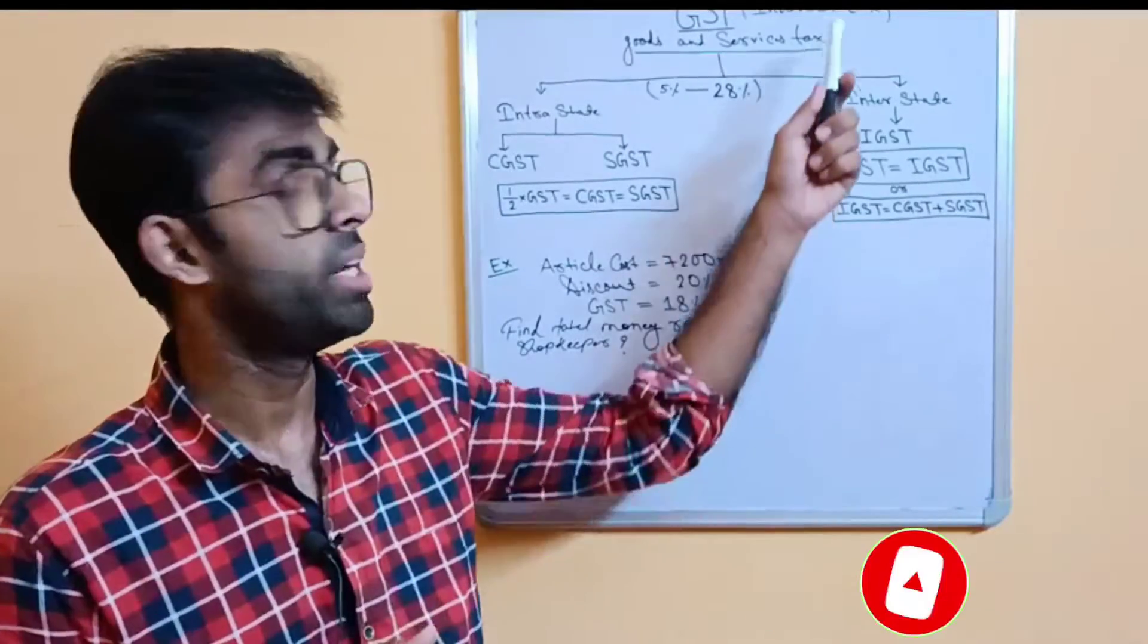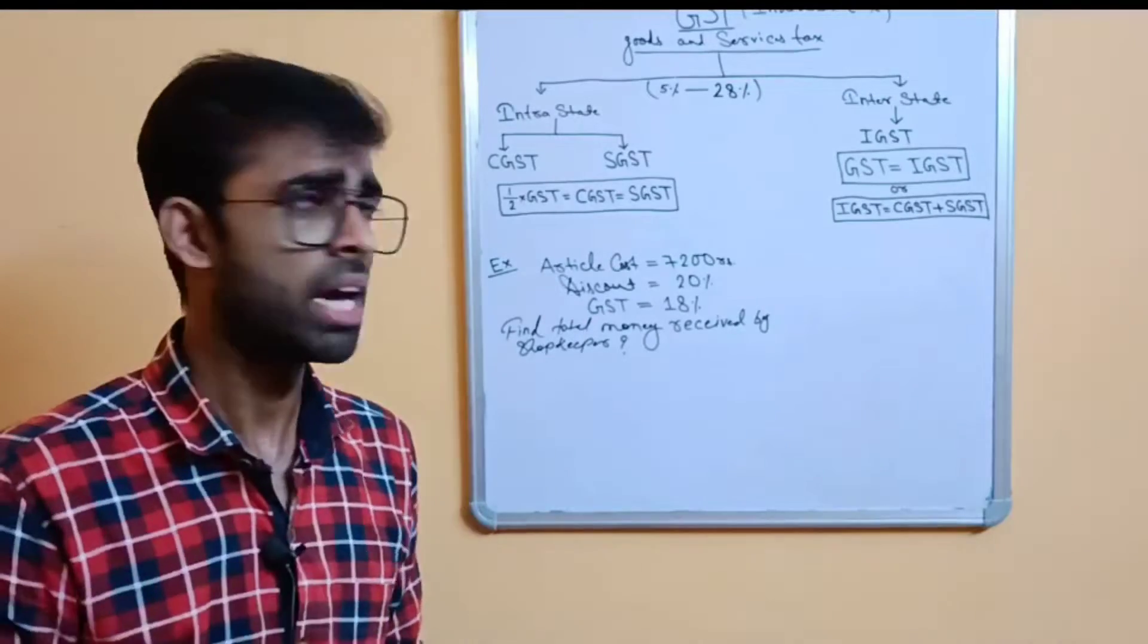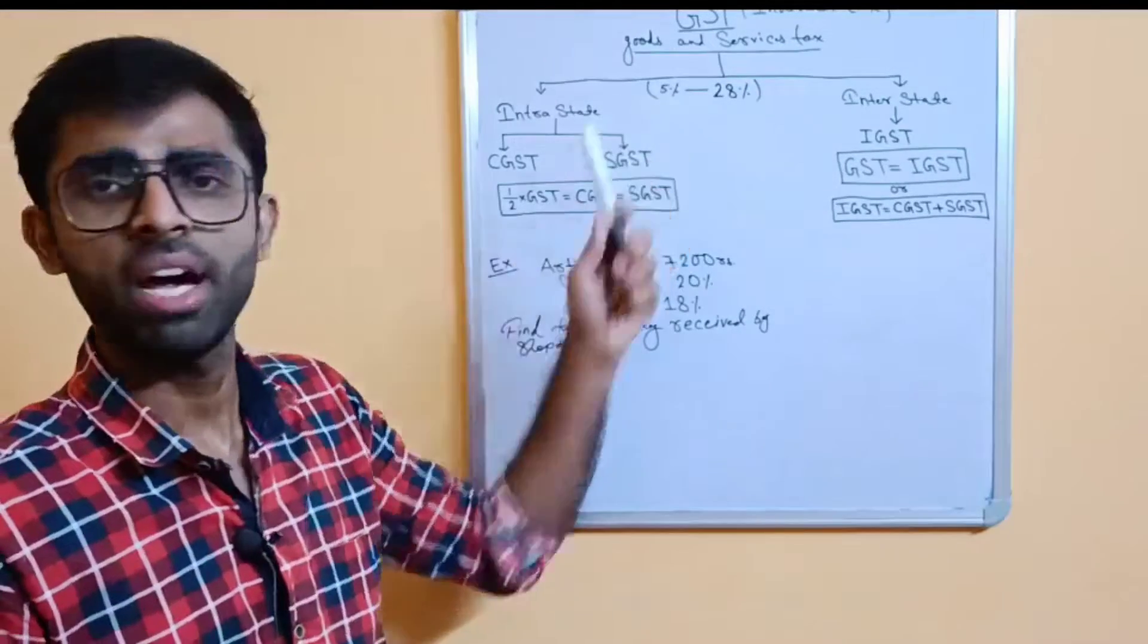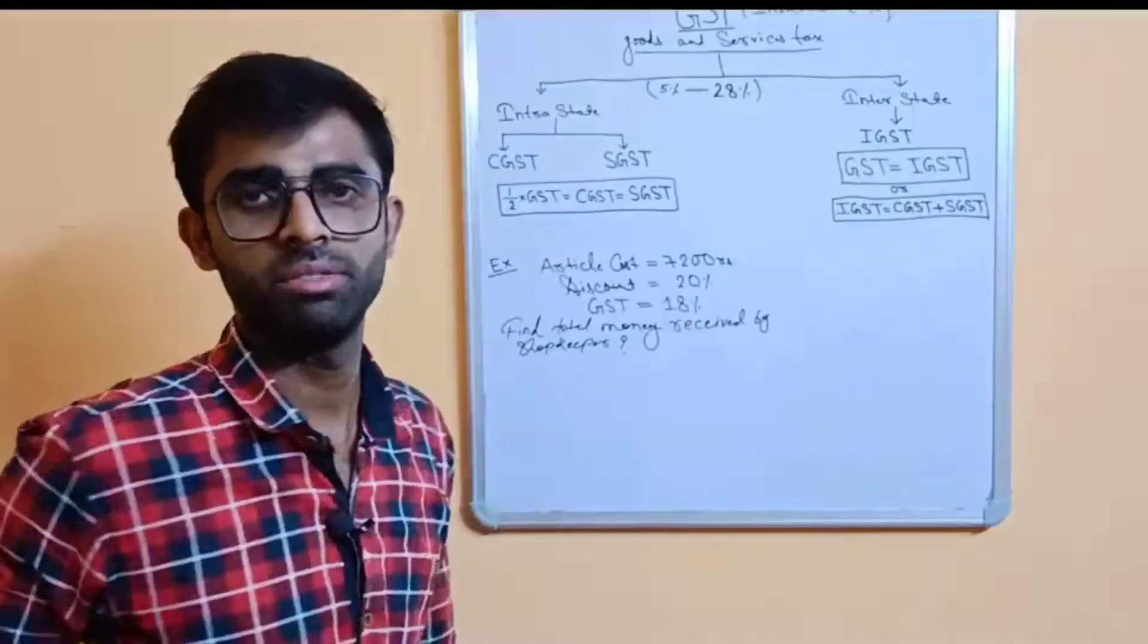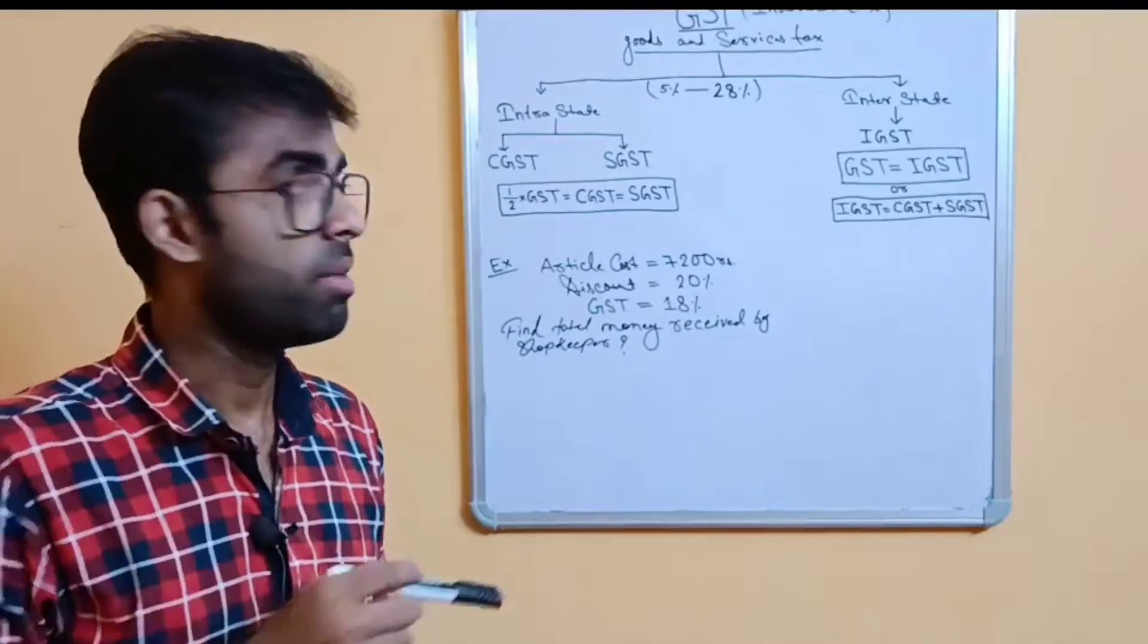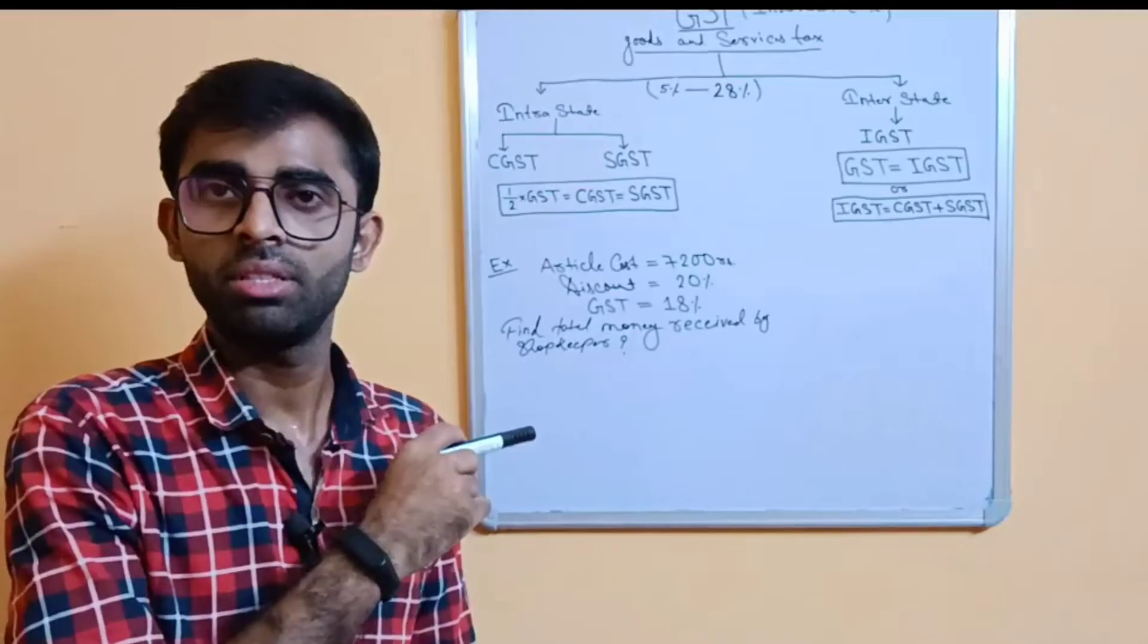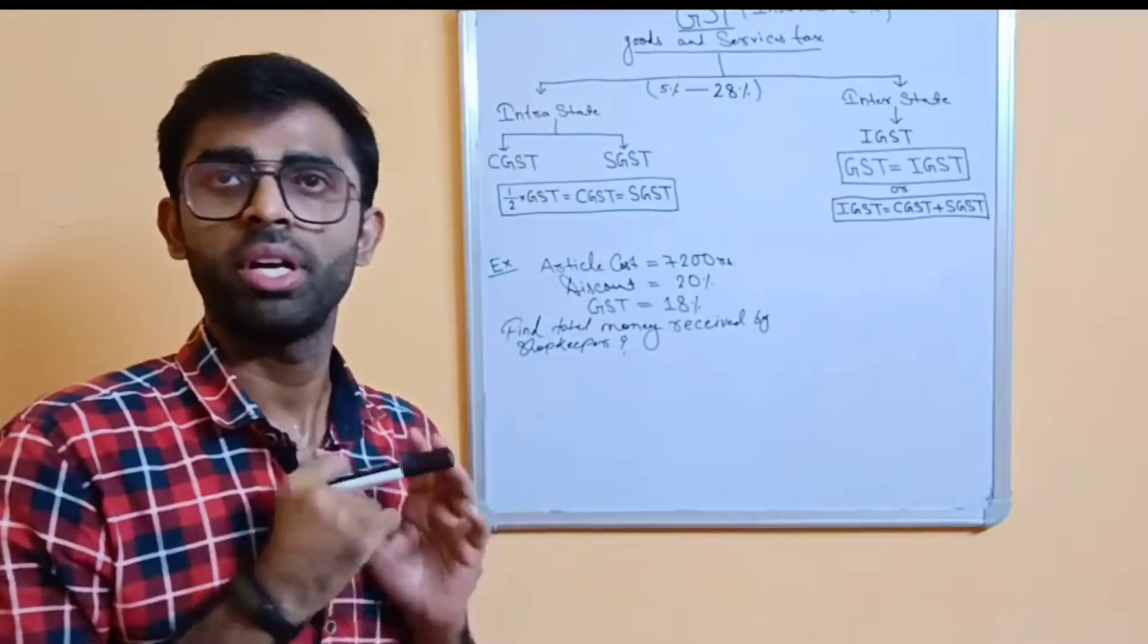So through me it went to the shopkeeper, through the shopkeeper it went to the government. So this type of taxes is called indirect taxes. So GST comes under indirect tax and its rate is minimum 5% and maximum 28%. So I hope everything is clear in this chapter.